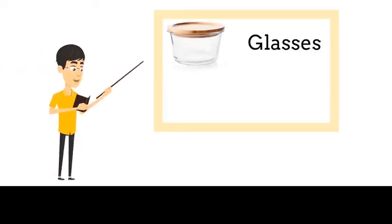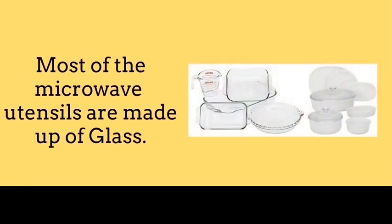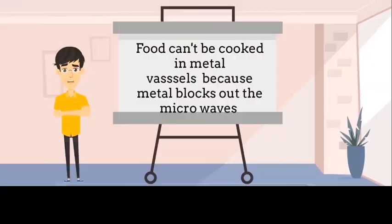Most types of glasses, paper, etc. do not absorb the microwaves, and hence do not heat up. That is why most microwave utensils are made up of glass. Also, food cannot be cooked in metal vessels because the metal blocks out the microwaves.